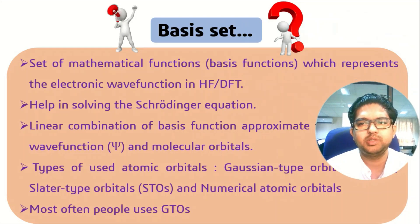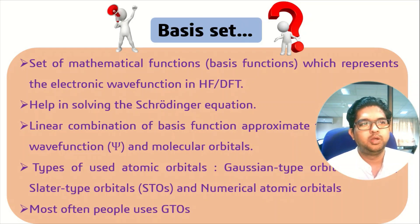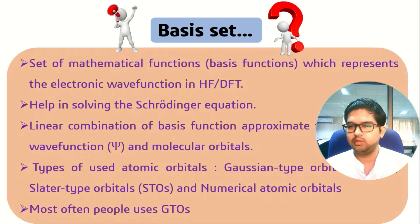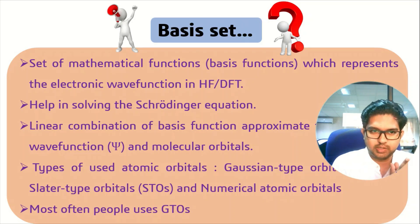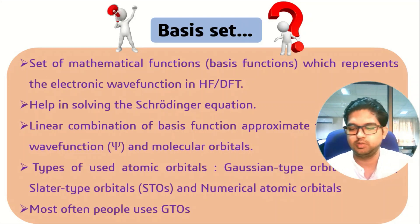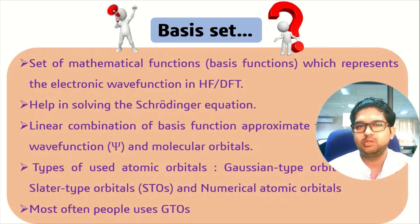A basis set is a mathematical function which represents the electronic wave function. When we solve the Schrödinger equation, we assume some wave function. For multi-electron systems it is not easy to guess the wave function, so this wave function comes from the basis set. The basis set helps us to solve the Schrödinger equation for a multi-electron species or a bigger system, where we approximate using a linear combination of basis functions.